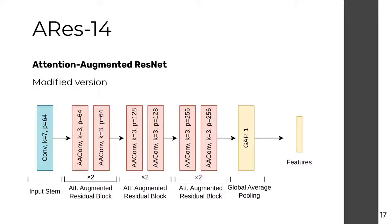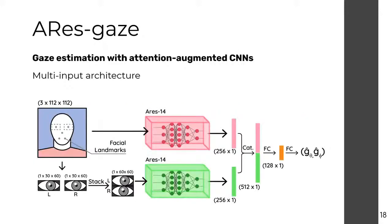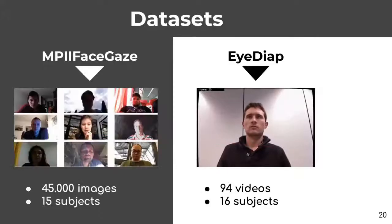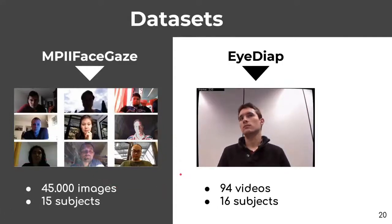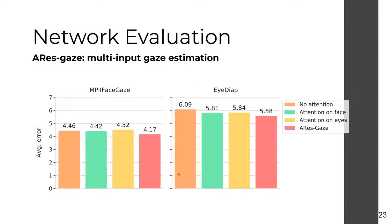Building upon the ARIS-14 architecture, we present our final gaze estimation framework: a multi-input, dual-branch architecture dubbed ARIS-Gaze. We use as input an image from the subject's face and the subject's eyes. These are passed through two separate ARIS-14 branches in parallel, and the extracted features are joined by concatenation and mixed by sequential fully connected layers to produce the final output — the pitch and yaw gaze angles. For experiments, we used the MPI FaceGaze and EyeDiap datasets, two widely used datasets for in-the-wild appearance-based gaze estimation.